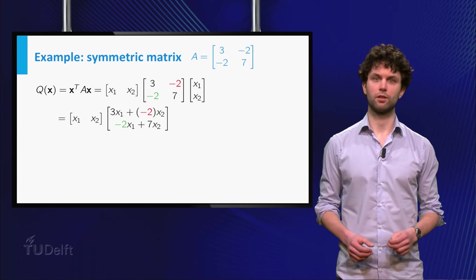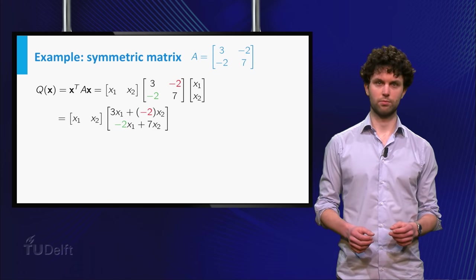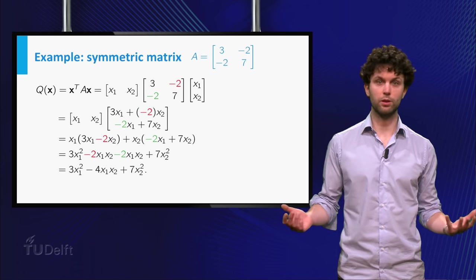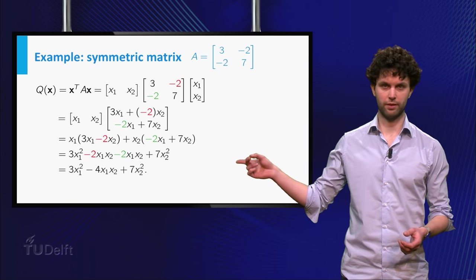Well, you see that we first obtain this vector product. By working out this product, rewriting and collecting equal terms, we obtain a quadratic form over here.